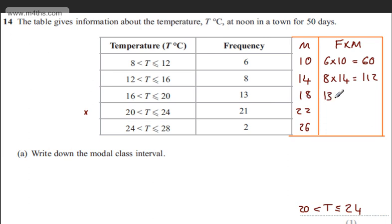So 13 times by 18, that's going to give me 234. We've got 21 times by 22, and that's going to give me 462. And then 2 times by 26, that's going to give me 52.